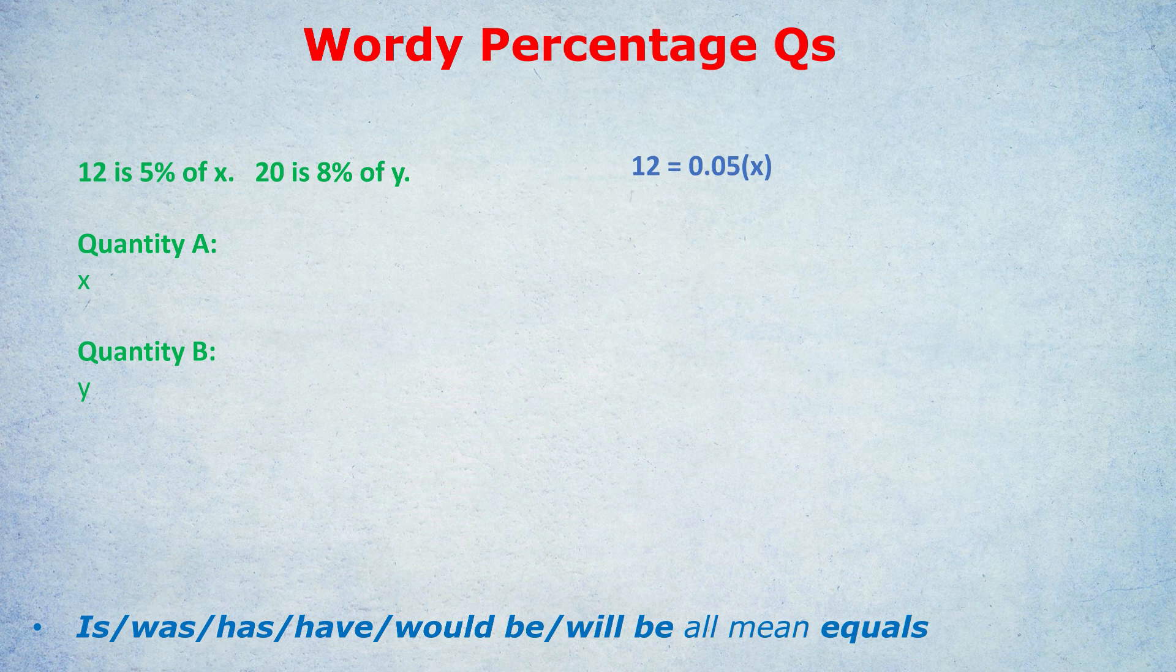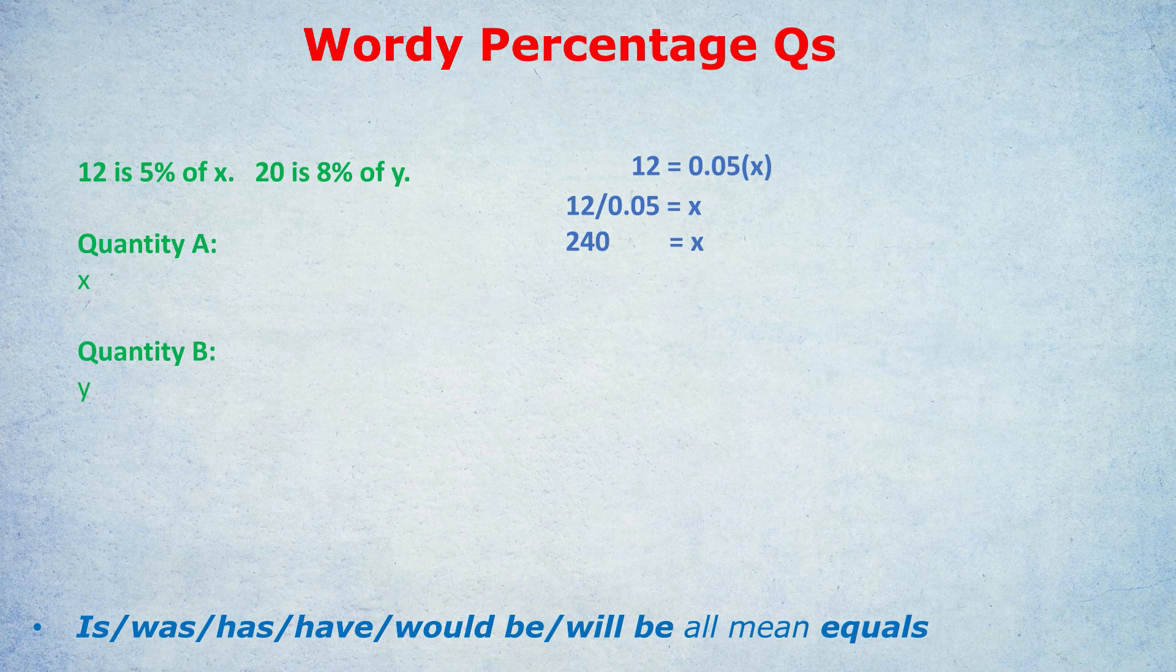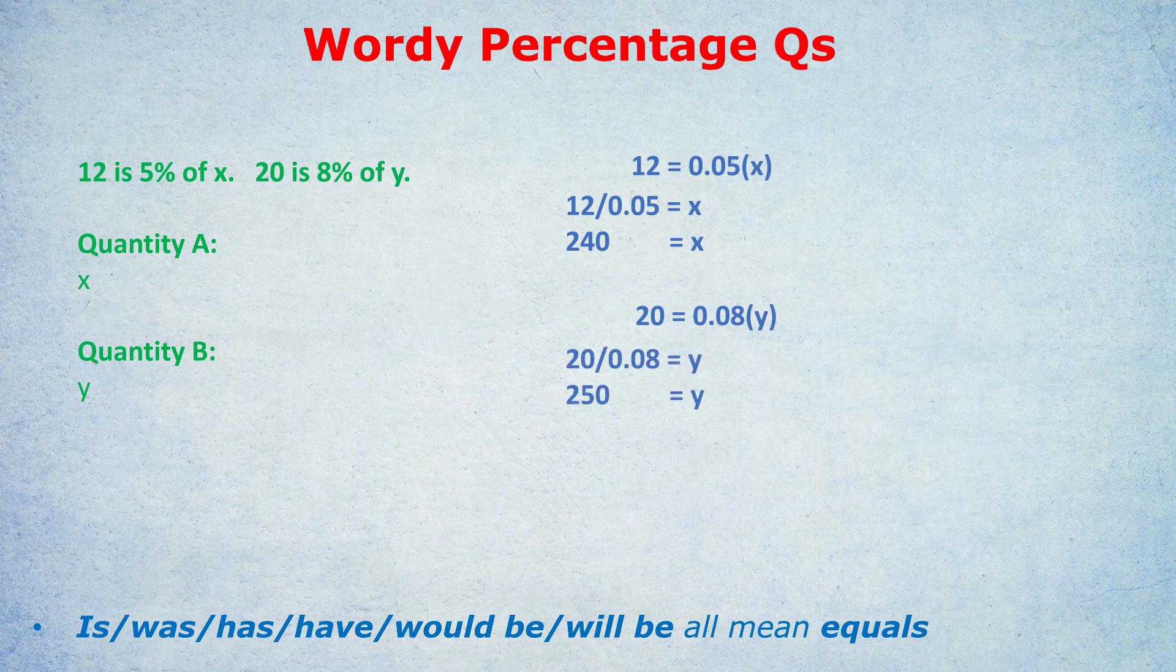Now, some of you might complain, why isn't it 1.05 or 0.95? 1.05 was for increasing by 5%, like if X had gotten bigger by 5%. 0.95 was for if X got smaller by 5% or was reduced by 5%. This question just said 5% of. So we don't have anything to do with 1, just 0.05 times X. So 12 is, 12 equals 5% of 0.05 times X. Let's quickly solve that. Divide both sides by 0.05. So X is 240. Can you set up and solve the next equation? 20 is, that's 20 equals, 8% of 0.08 times Y. Divide both sides by 0.08 and you get your Y, which is 250. In this case, Y is bigger, slightly, so quantity B is bigger.